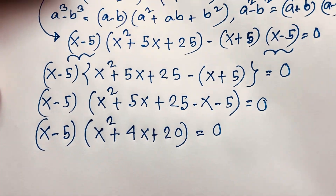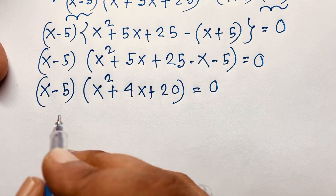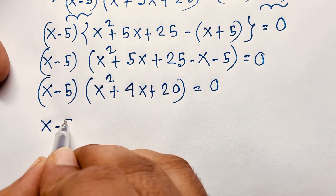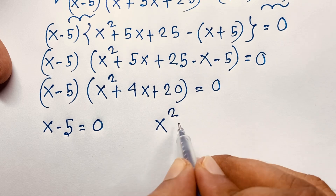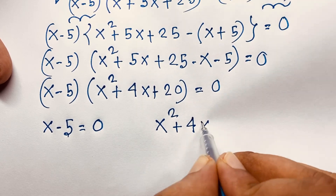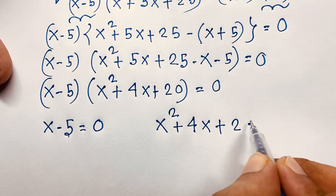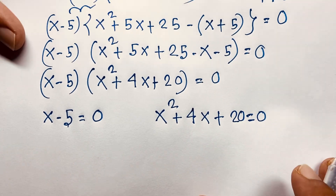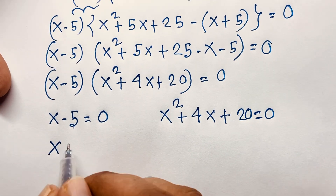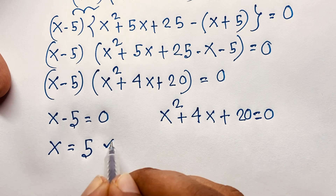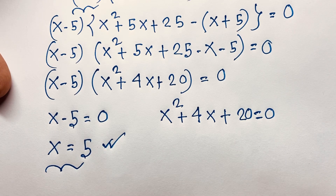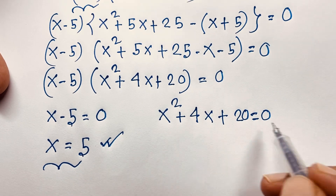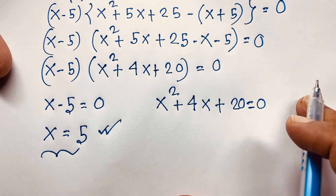This gives us two cases. Case 1: x - 5 = 0, so x = 5. This is our real solution. Case 2: x² + 4x + 20 = 0, which is a quadratic equation that will give us two more solutions.